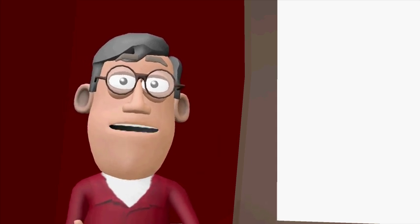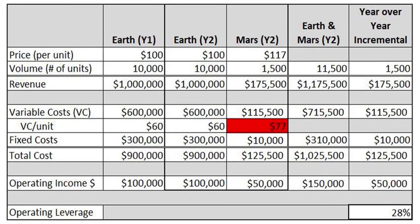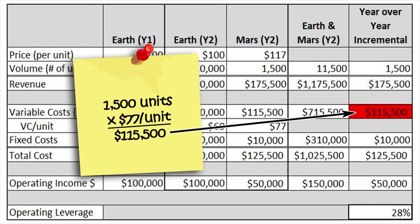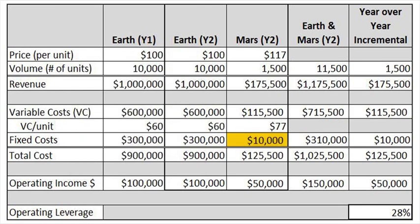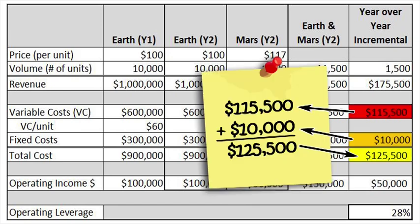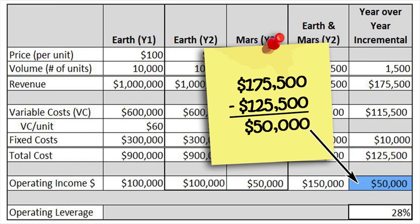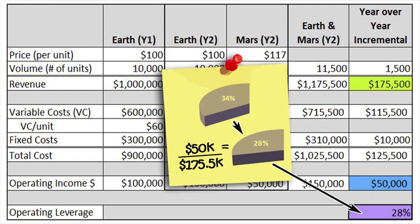How do these two changes impact operating leverage? Our variable cost remains constant at $77 per unit. However, due to the increase in volume, incremental variable costs increased from $77,000 to $115,500. Remember, we also invested an incremental $10,000 in back office support, resulting in increased fixed overhead and total incremental costs of $125,500. So even though total revenue increased to $175,500, operating leverage decreased due to fixed cost investment, with a net result of $50,000 in operating income dollars and operating leverage of 28%.